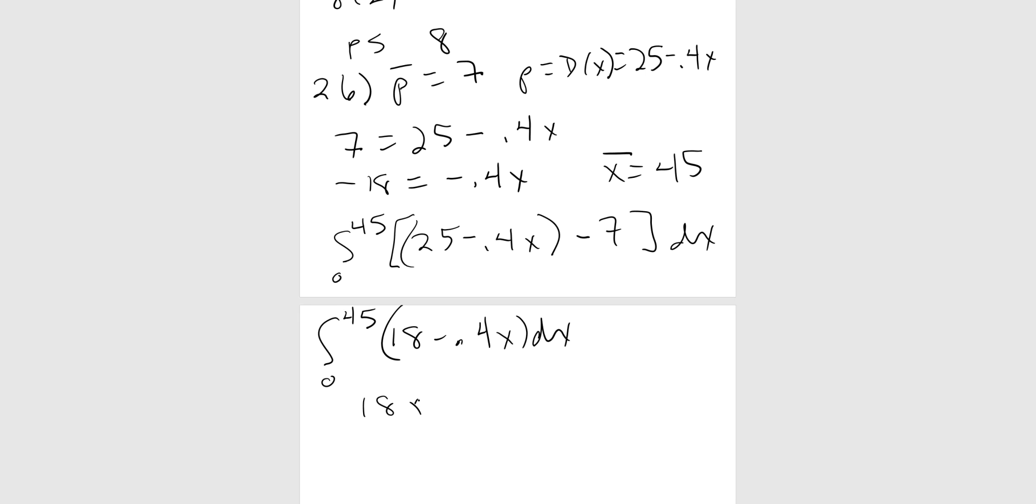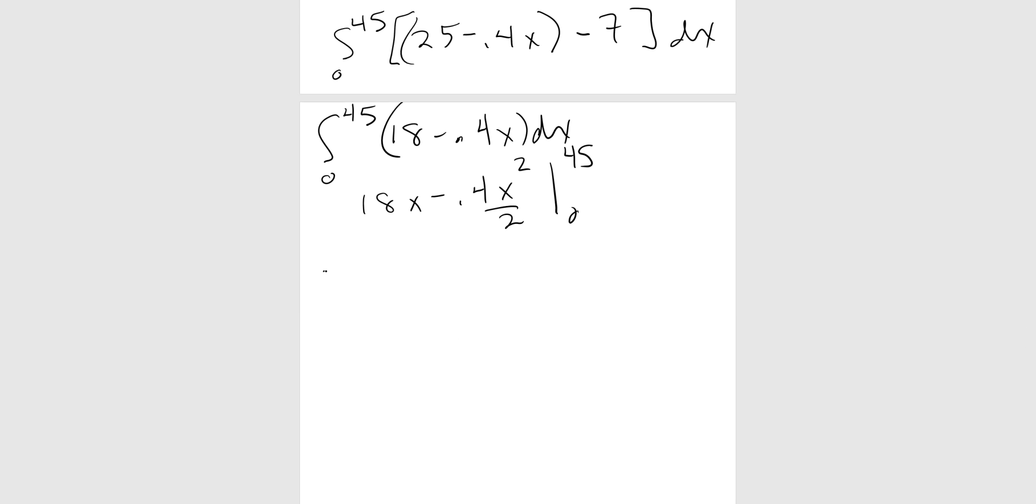We are going to integrate from 0 to 45. I put the demand function first, 25 minus 0.4x, and then we're going to subtract the price 7 that was given dx. I'm simplifying before I integrate. I do 25 minus 7, you're going to get 18, minus 0.4x dx. So the 18 becomes 18x, the minus 0.4 is now minus 0.4x squared over 2, 0 and 45. I like to simplify this to 18x minus 0.2x squared, 0 and 45. I have 18 times 45 minus 0.2 times 45 squared. So 18 times 45 minus 0.2 times 45 squared gives us 405. End of the problem, that one was only asking consumer, and I do do that on the test. The last one we did producers and consumers. This one I just did consumers.